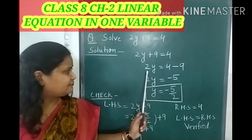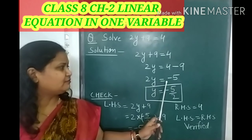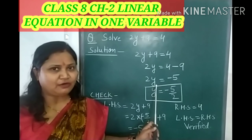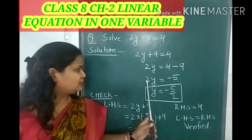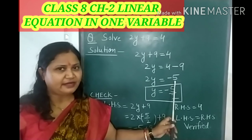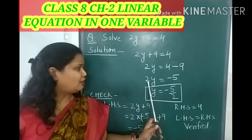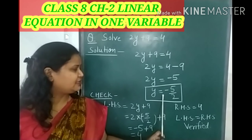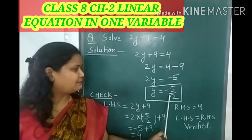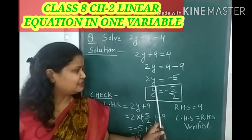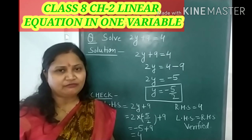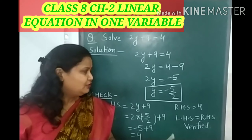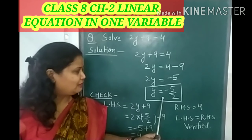Now our equation becomes 2y equals to minus 5. To find the value of y, we move the 2 to the right side. Our equation becomes y equals to minus 5 upon 2. This is the required value of y.